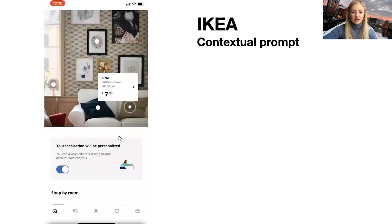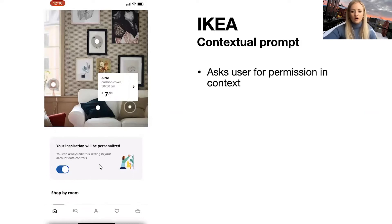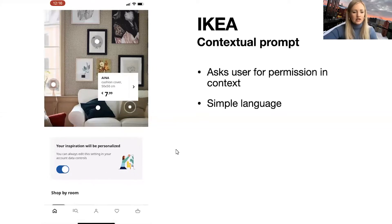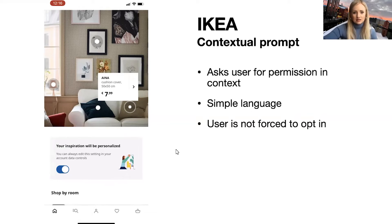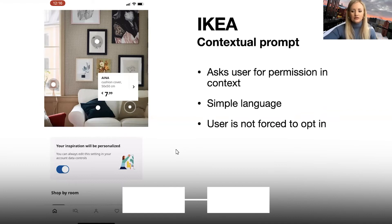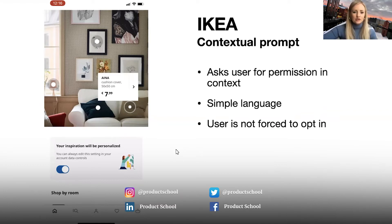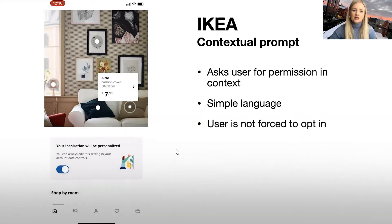Another example from IKEA is this contextual prompt. In the inspiration screen, there's a prompt asking: do you want your inspiration to be personalized? You can give access to your browsing data to make it more personalized. It uses really simple language and it's contextual — you're in that experience and that's where the benefit will be delivered. You're not forced to opt in, but it's there if you want to. Think about the experience for both the user who opted in and the user who didn't, and make both as good as possible — not a happy path and an unhappy path.